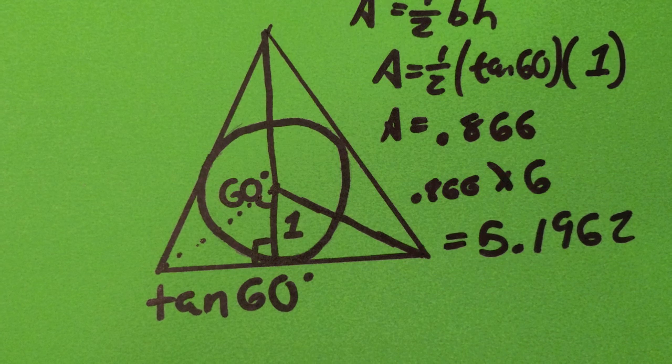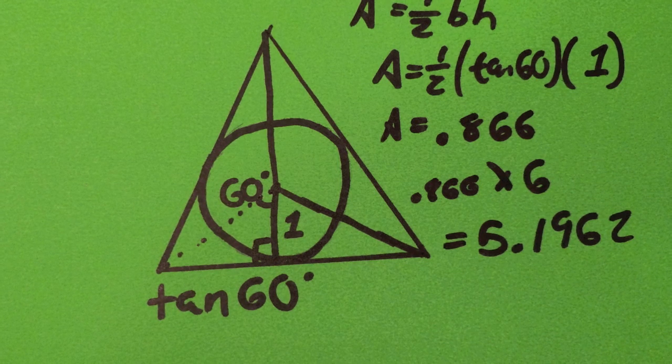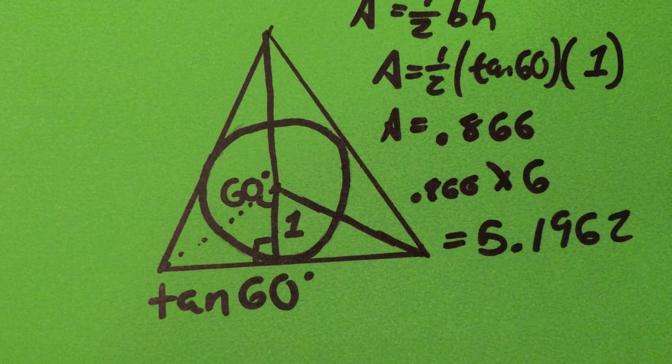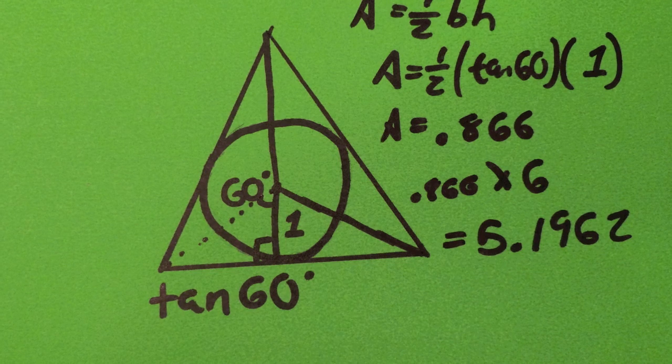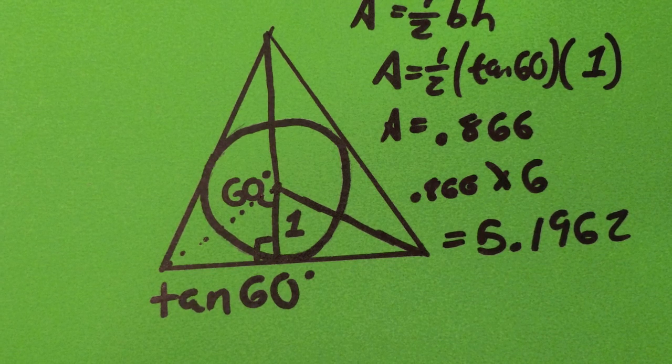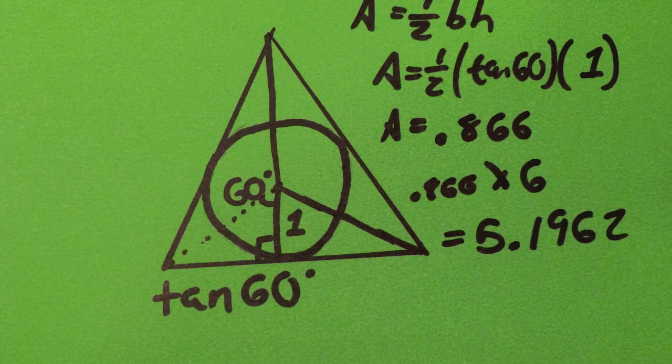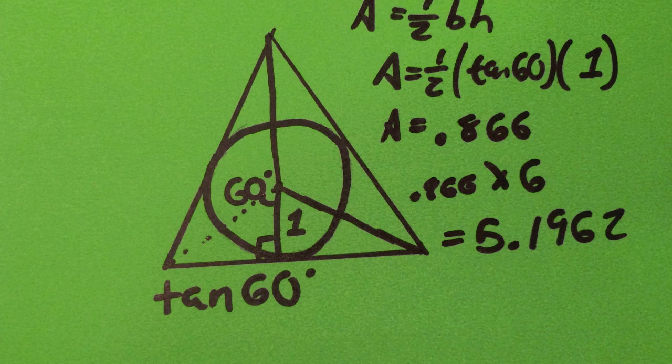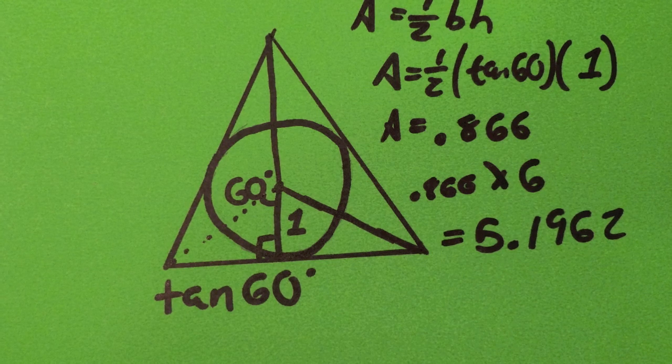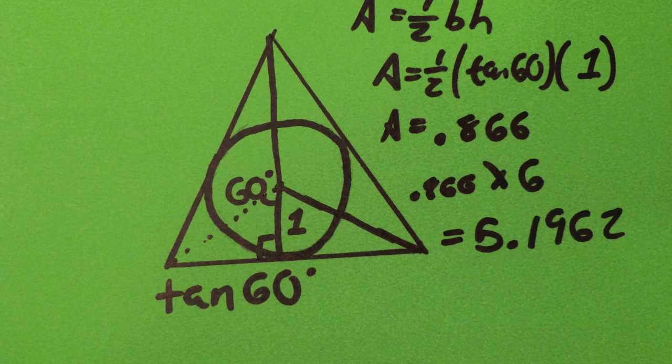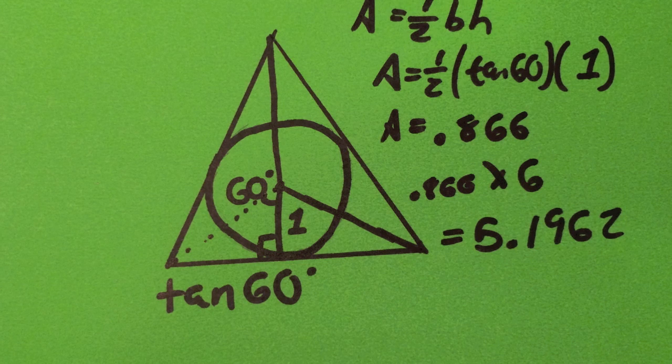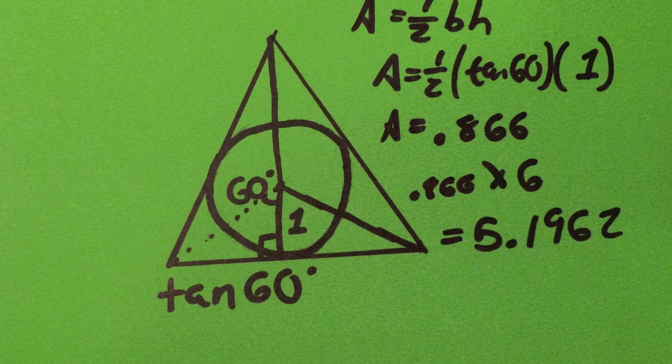Unlike before, however, you do not know the hypotenuse of the triangle, only the height, as it is 1 because of the radius of the circle. So instead of using cosine or sine, use tangent of 60 to find the base of the triangle. Now that you have the base and height, plug it into the area formula for triangles, one half base times height, then multiply that number by 6 to fill the entire triangle out. It should have an area of 5.1962.